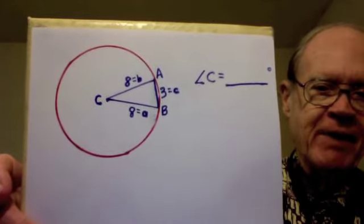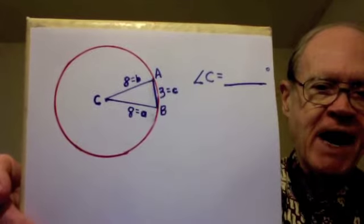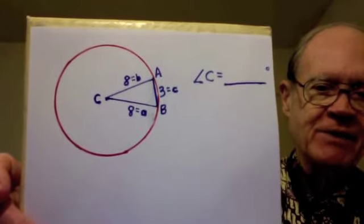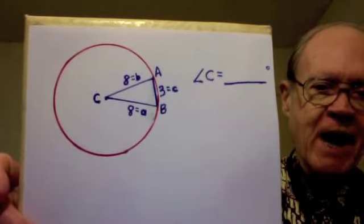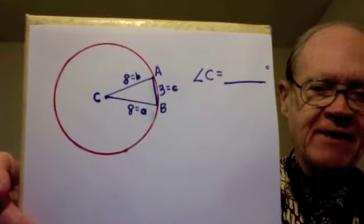And, as is customary, we've got lowercase letters for the sides, along with the capital letters for the angles, with side a opposite angle A, side b opposite angle B, and side c opposite angle C.